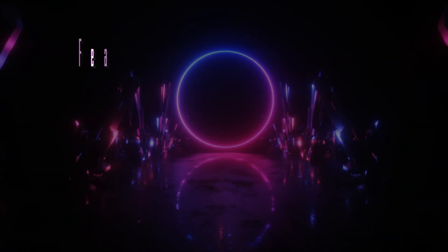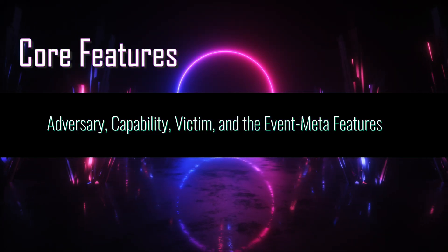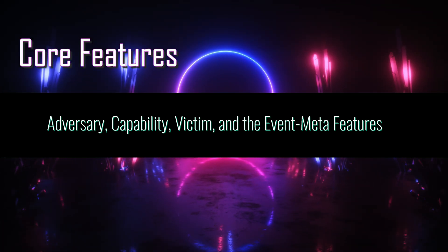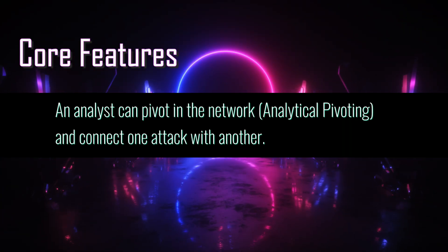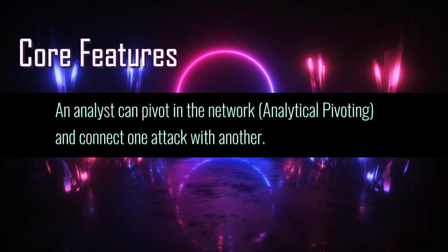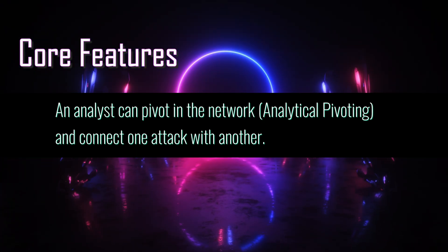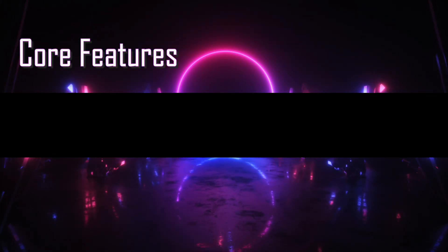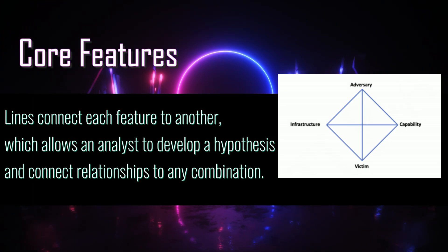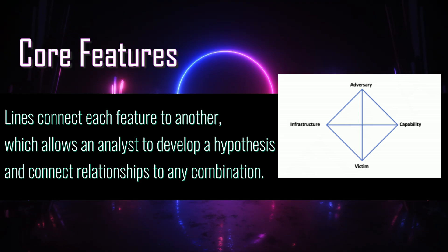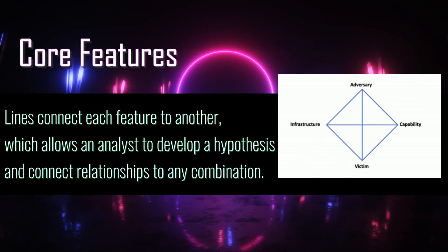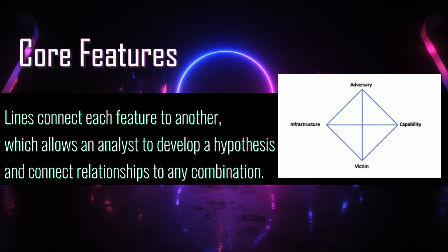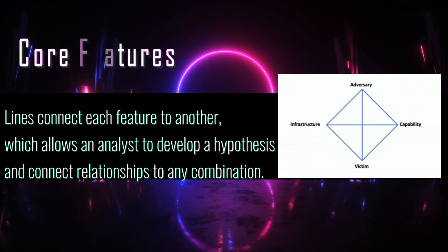Now to the core features of the Diamond Model. The main variables in core features are the adversary, capability, victim, and event meta features. Just like an attacker can pivot in the network, an analyst can pivot from each of the core features and connect one attack with another. These pivoting points don't need to be for the same attack, but they could be. There are lines that connect each feature to another, which allow an analyst to develop a hypothesis and connect relationships in any combination.